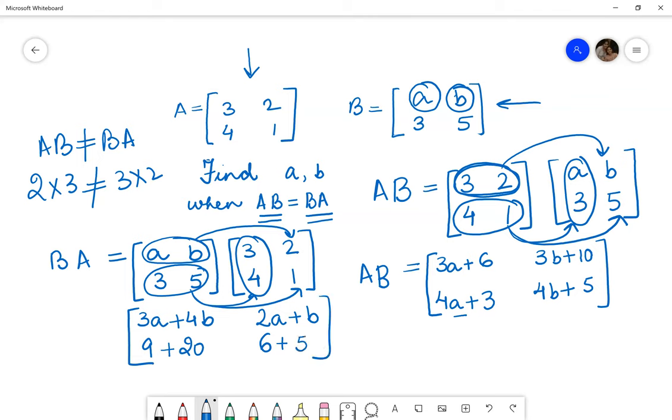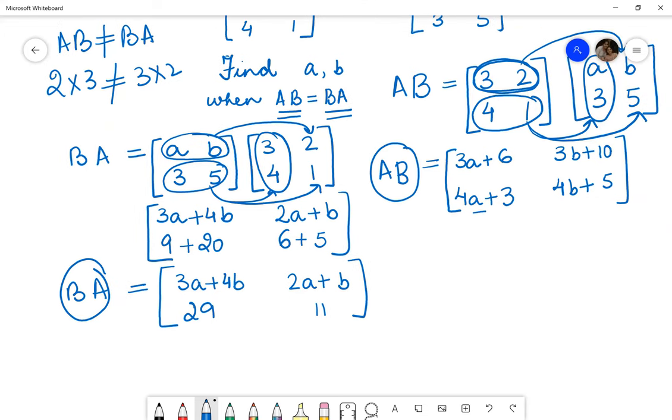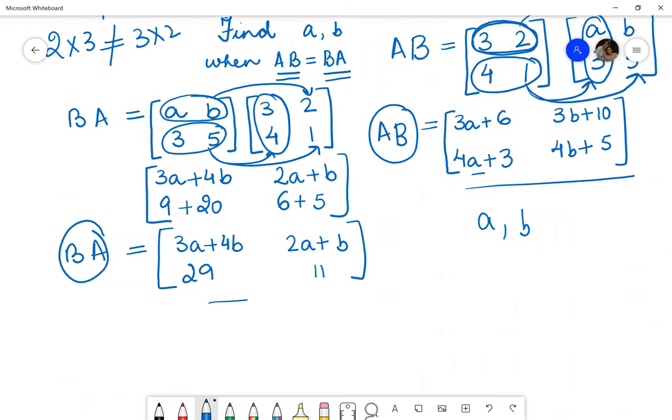So we'll just simplify it further, which will be matrix BA equal to 3A plus 4B, 2A plus B, 29 and 11. So we've got these two values. Now to find the values of A and B, we need to equate these two matrices.